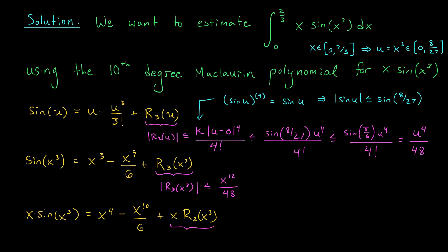Finally, we need a bound on |x·r₃(x³)|. Since |r₃(x³)| ≤ x¹²/48, this entire expression is bounded above by |x¹³|/48. Since we're integrating over positive x values, we can drop the absolute value, giving x¹³/48. We're through the hardest part of the problem. On the next slide, we'll use this error bound to estimate the value of the integral.